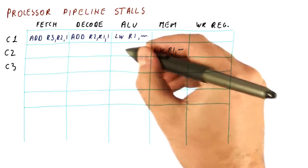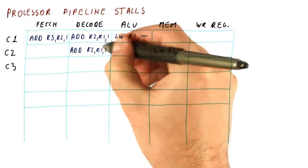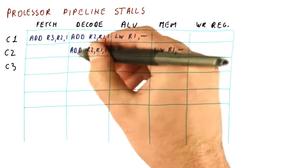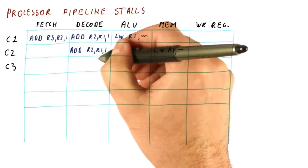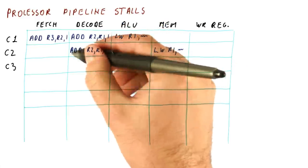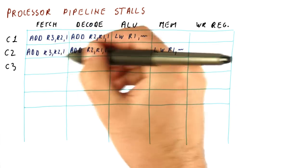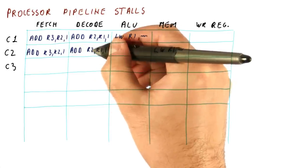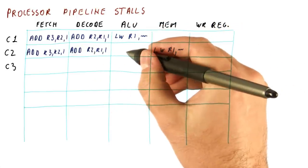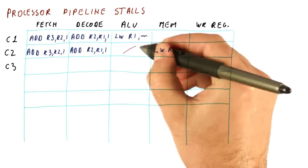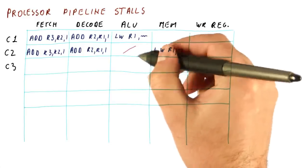Pretty much what needs to happen is the add needs to stay here until it gets the correct value of R1 from the load. Because the add is stuck here, the next instruction also needs to stay where it is because it cannot move here. That means that in our pipeline, now we have a bubble, just like we did in the production line.